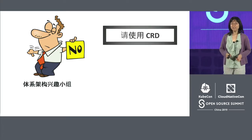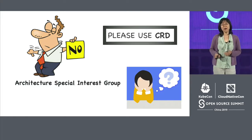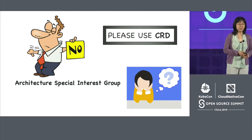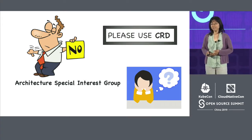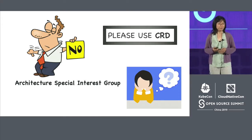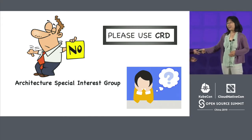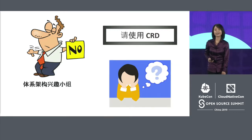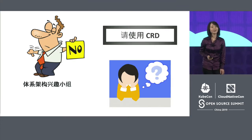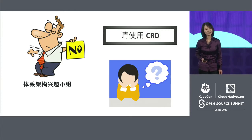They told us no and to use CRD instead. At that time, we had many questions: Why? Why push us out? Why do we have to do this out-of-tree with CRD? Isn't CRD for third-party application things? Doesn't that mean our feature is not important enough to be part of Kubernetes? We were very hard trying to change their mind. We tried many different ways to prove that Snapshot API should stay in-tree and that SIG Architecture was wrong. But after many, many rounds of discussions, we finally changed our minds and agreed with the decision.